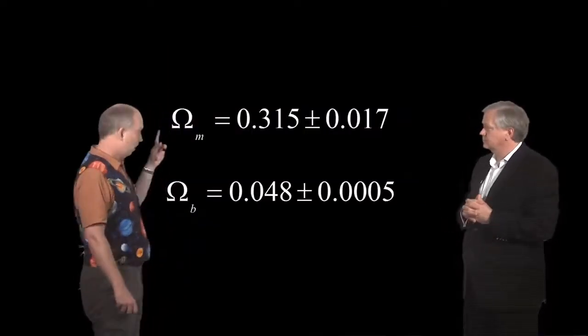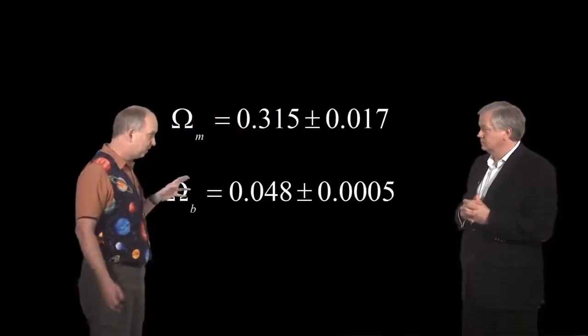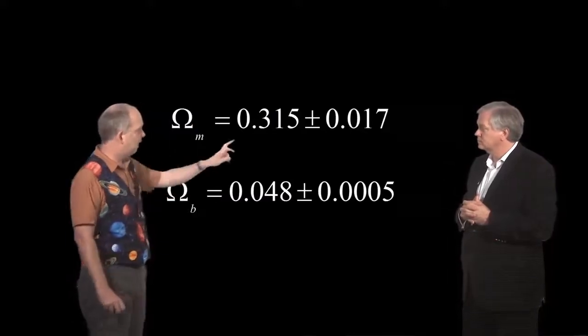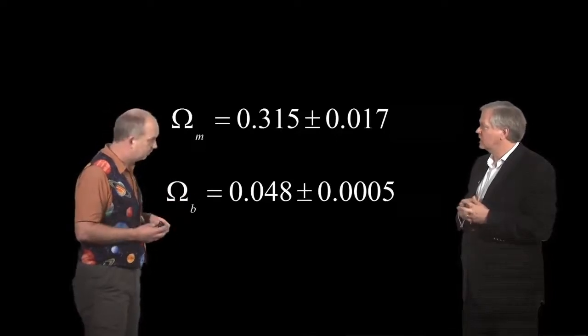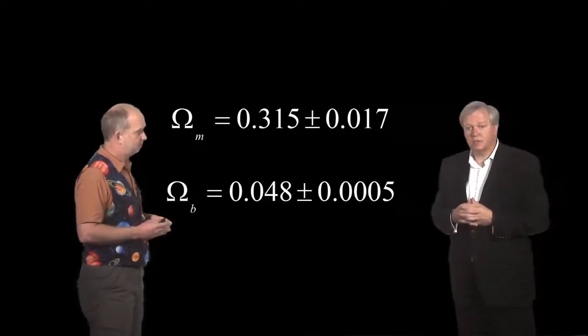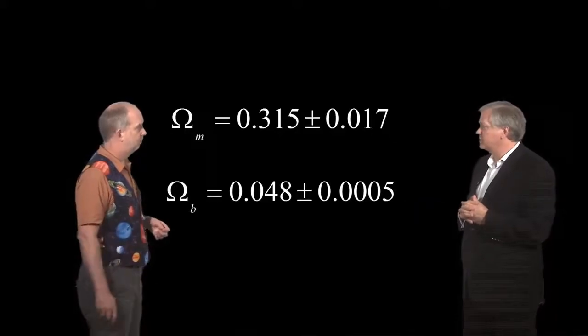you can learn omega matter, so all matter, dark plus baryons, is about 31.5% of the critical density of the universe. And this is from the Planck experiment, the best experiment we have at this point.